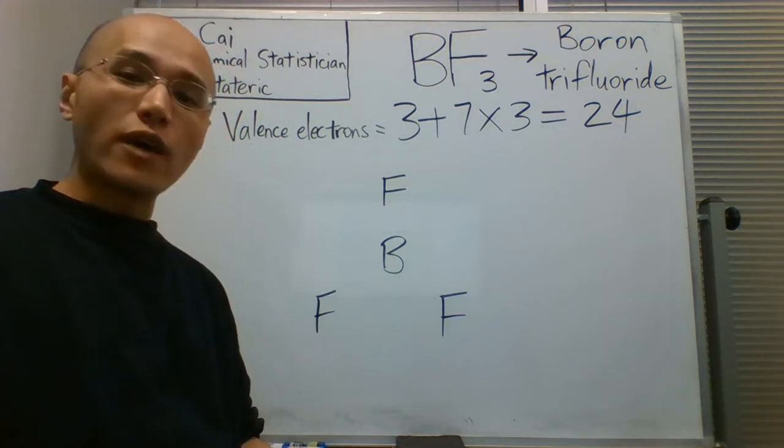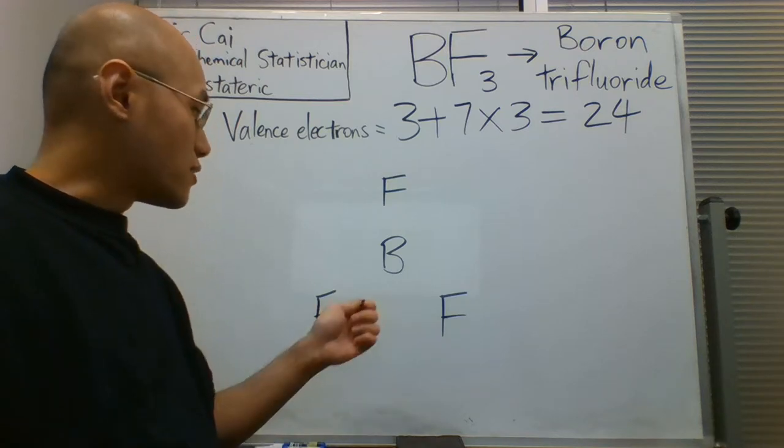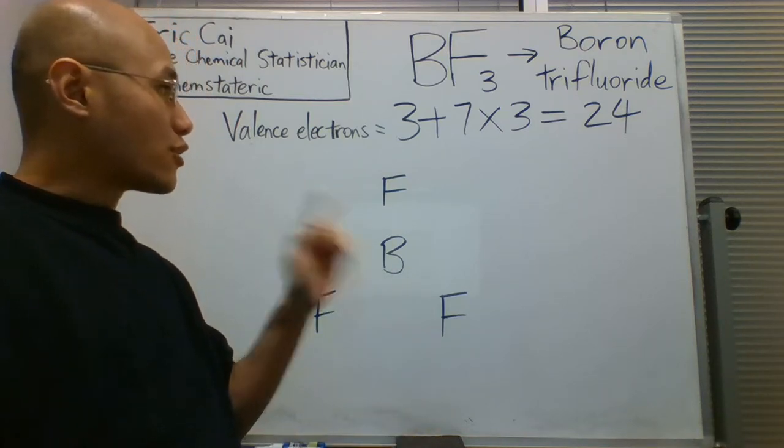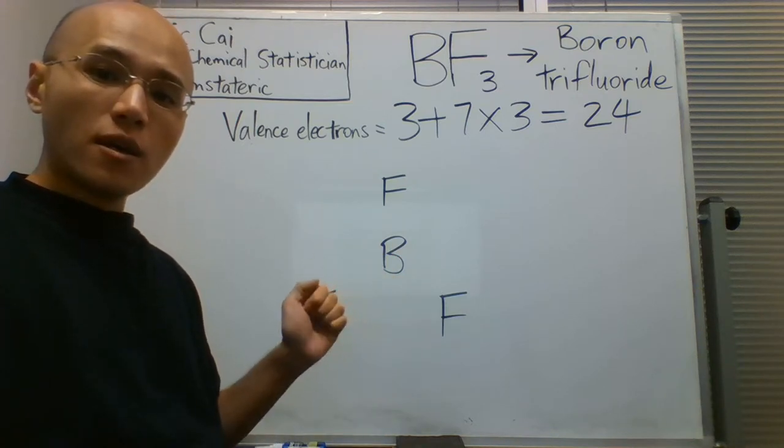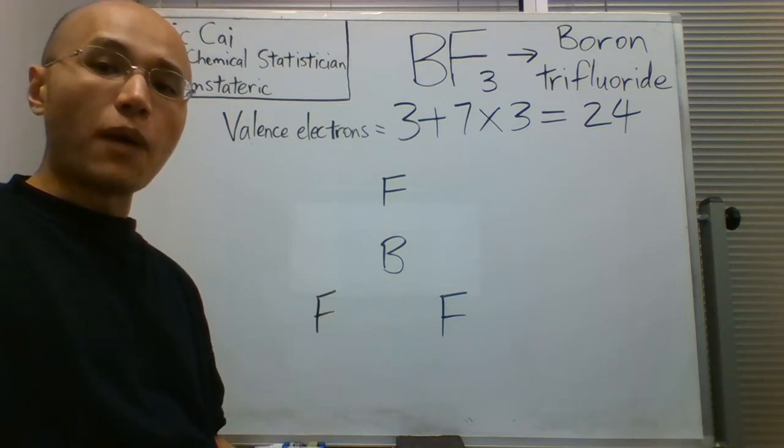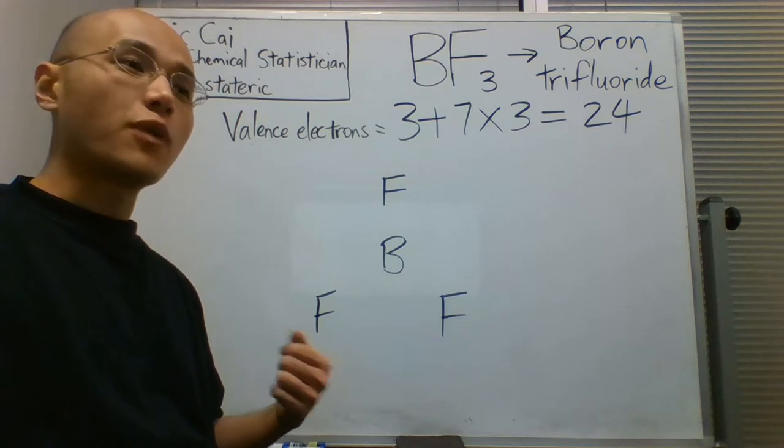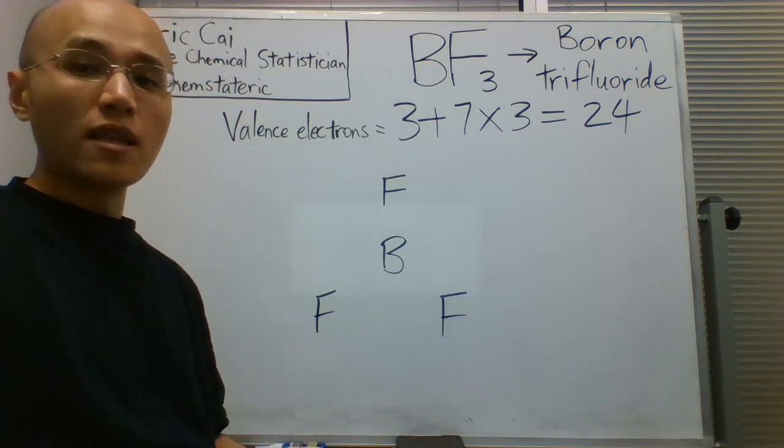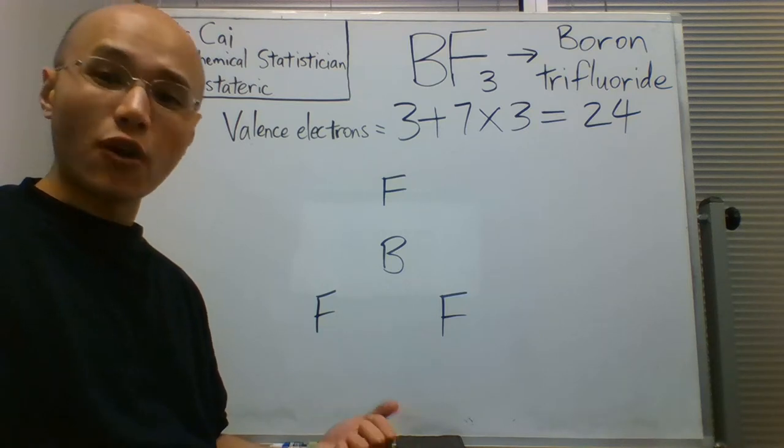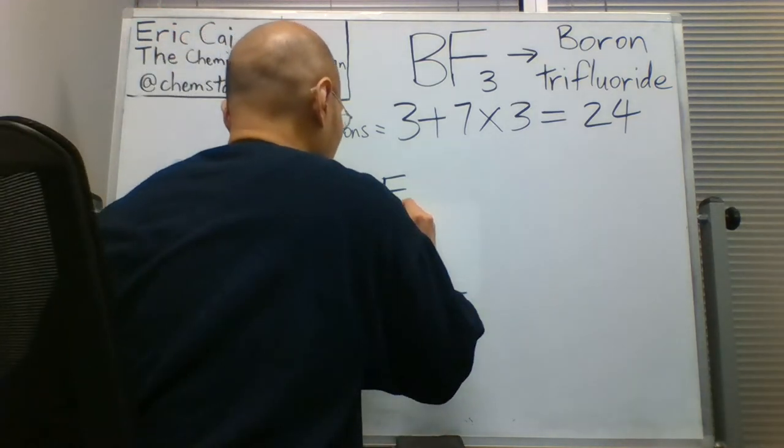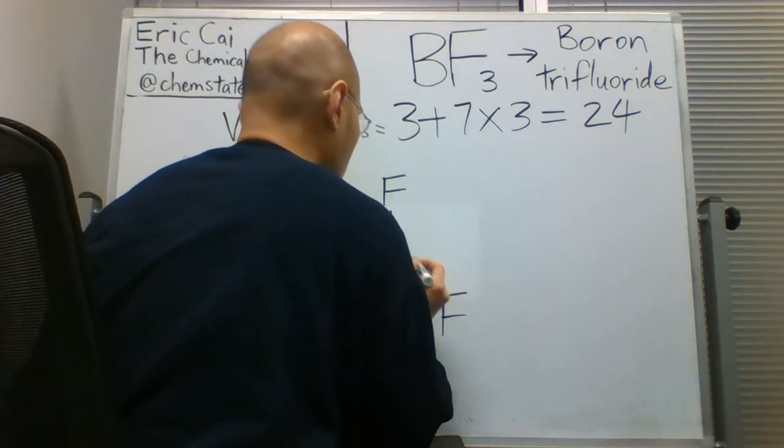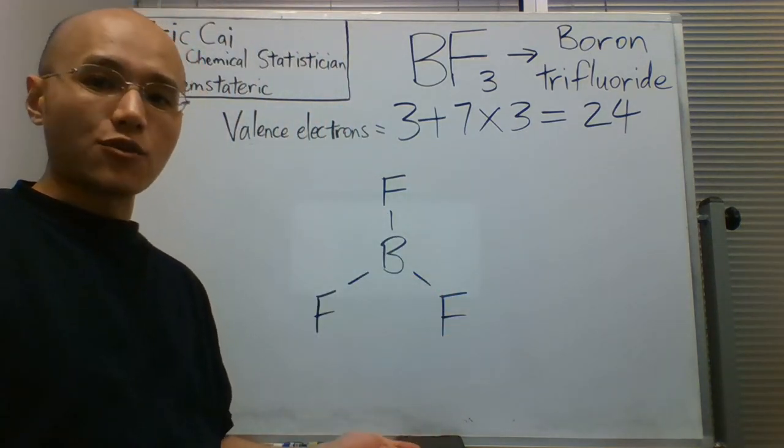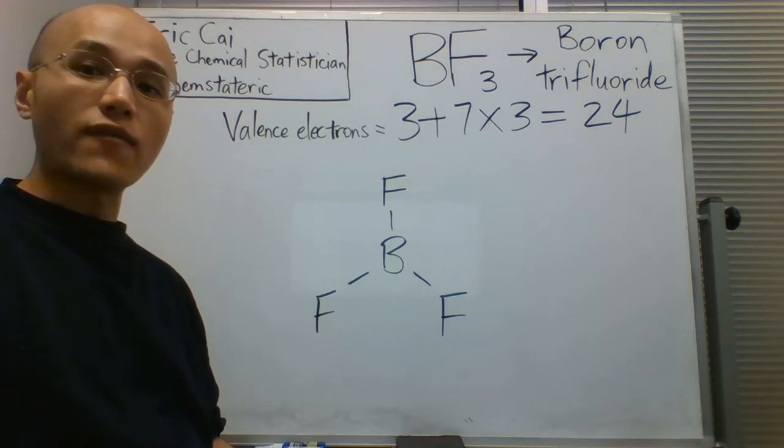We're now ready to distribute the electrons into this molecule. A good way to start is by assuming that the bonds are all single bonds. That's not always true, but it's a good starting point. This takes away six electrons from the 24, so we have 18 left.